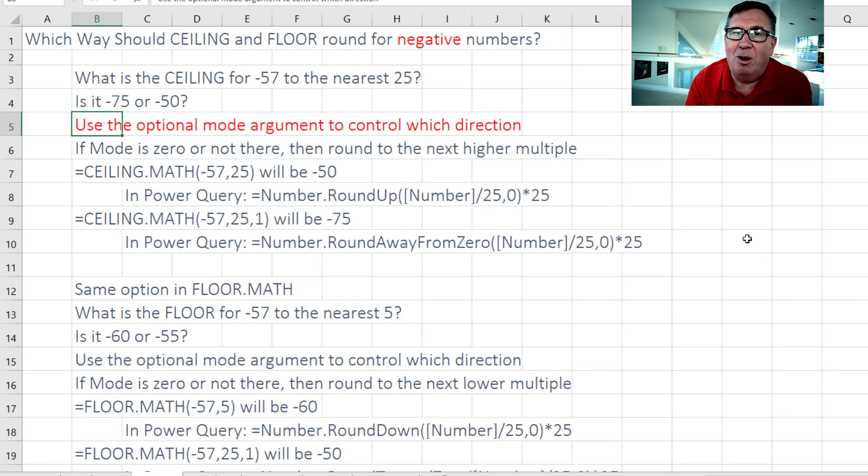But this all gets complicated when your number is negative. If you're sitting at negative 57 and you want to go to the higher 25, what is that? Some people would say that's negative 75. But negative 75 is less than negative 57. So mathematicians would say the right answer is negative 50.